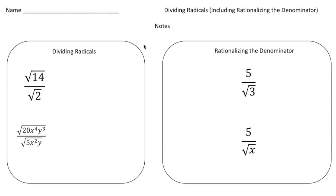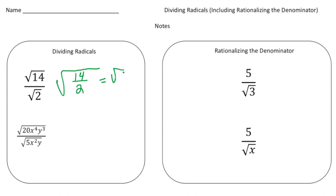Let's first go over how to divide radicals. Here we have the square root of 14 divided by the square root of 2. The rule for dividing radicals is pretty simple. If you have a square root on the top and a square root on the bottom, you're allowed to write a new radical with 14 on the top and 2 on the bottom. So 14 divided by 2 gives us 7, and the answer is just the square root of 7.